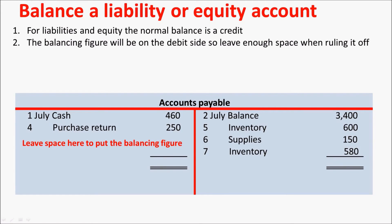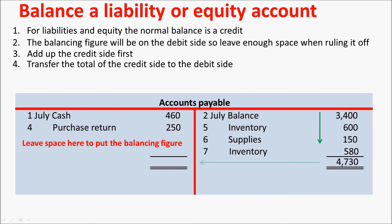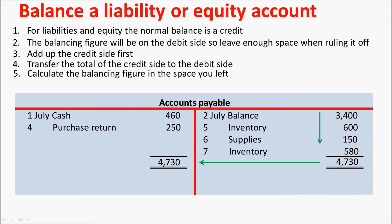Add up the credit side first, and then transfer that figure over to the debit side. Calculate the balancing figure in the space that you left, and then transfer that figure back to the credit side.